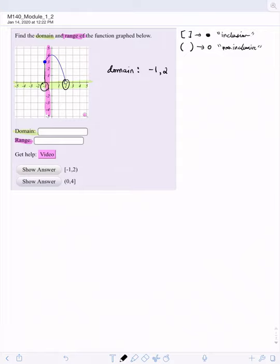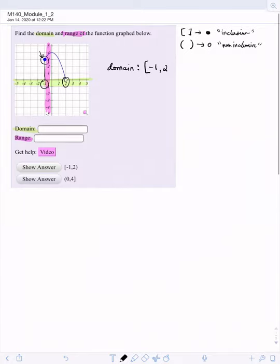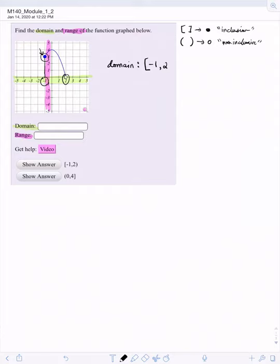So we see on negative one that there is a closed hole, so we know there's a bracket on negative one. On two, we see the open hole, so we know to use a parentheses. So there's the domain.